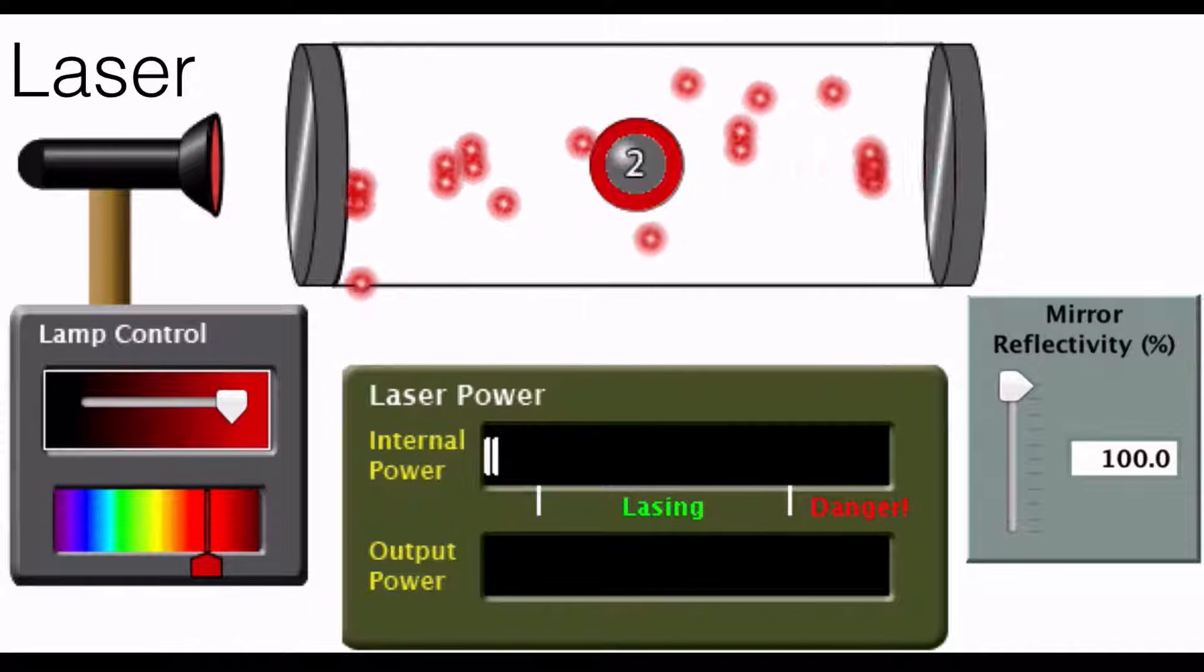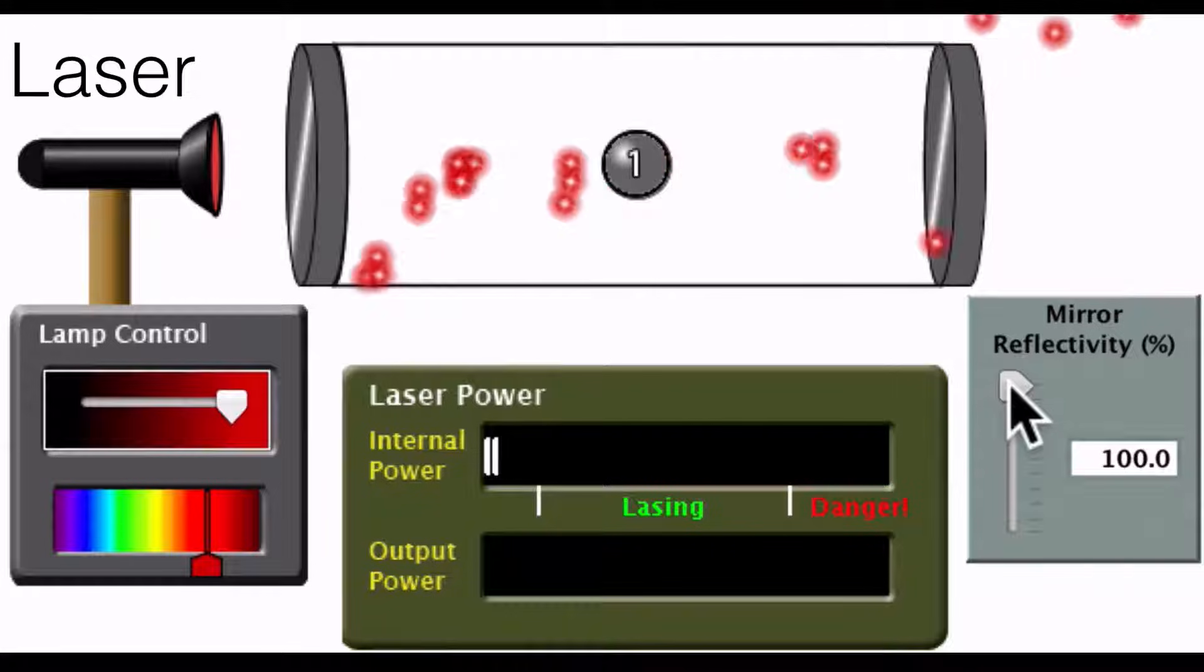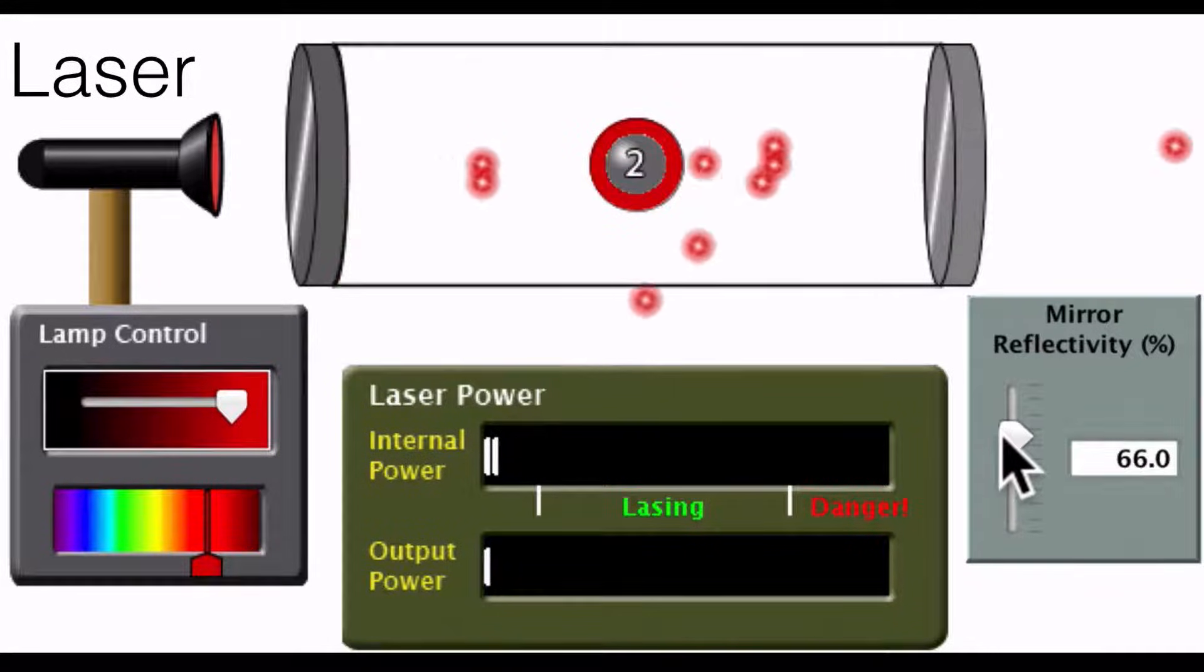If this is a laser, we could put mirrors on either side. They are going to bounce back and forth. Then the mirror on the right, we could just decrease the reflectivity a little bit and those photons are going to move out coherently.